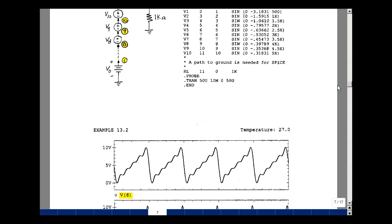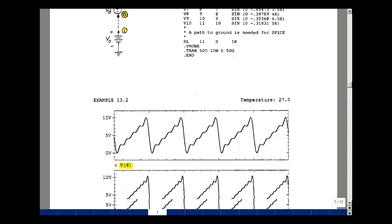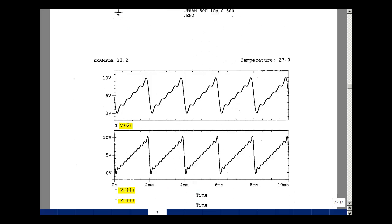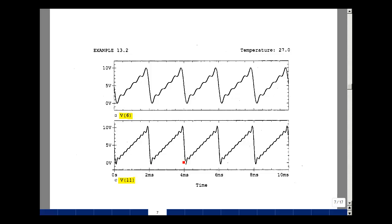By looking at node voltage 6, we can see the first five terms that were summed together. Here you can start to see our triangle wave starting to form. Looking at node voltage 11, we can see the remaining terms. Here is the DC level plus the 10 terms in my summation.